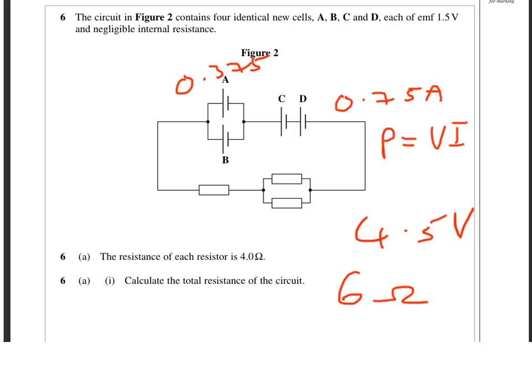So that was the end of our nine mark question. Not the easiest, but some basic things there in terms of combinations of resistors. You should be okay with that. Combinations of cells, a little more unusual. And then once you've worked out the total EMF of the circuit and the total resistance of the circuit, a couple of calculations on current and a bit of understanding of power really for that last little bit of the question.